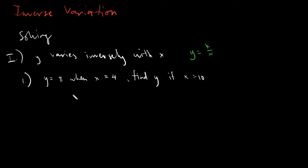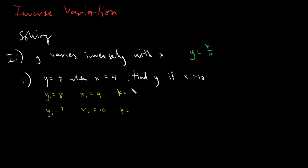Denote your first set as y sub 1 and x sub 1, and your second set as y sub 2 and x sub 2. Since y is unknown, we leave it blank, and x sub 2 equals 10. Under variation, each set will have the same value of k. After writing down your given, simply solve for the value of k. K can be solved from the set that has complete variable values.